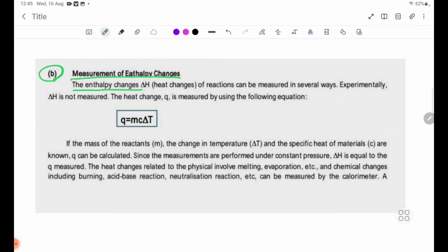The enthalpy changes delta H, or heat changes of reactions, can be measured in several ways. Experimentally, delta H is not measured directly. The heat change Q is measured by using the following equation: q equals mcΔT. If the mass of the reactants m, the change in temperature delta T, and the specific heat of material c are known, Q can be calculated.